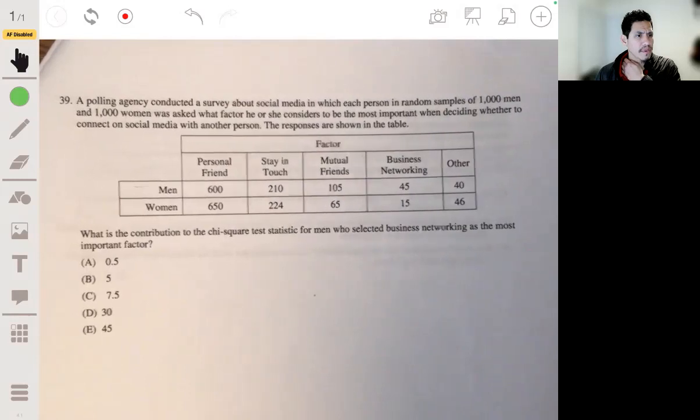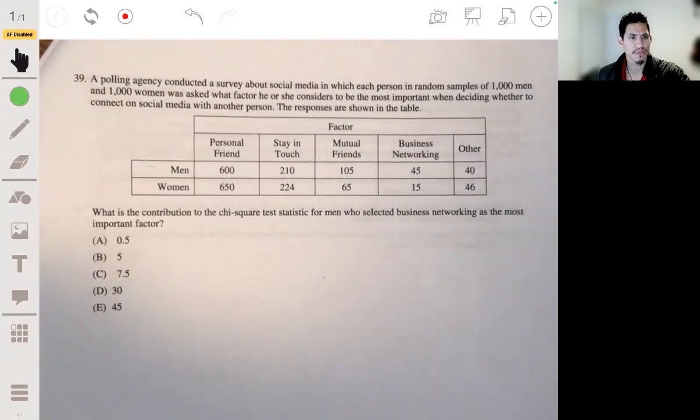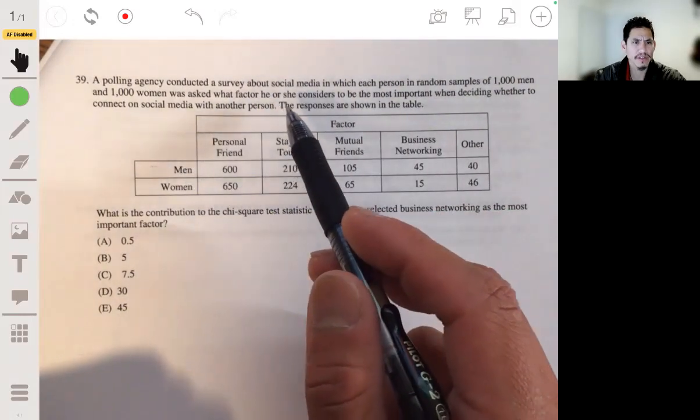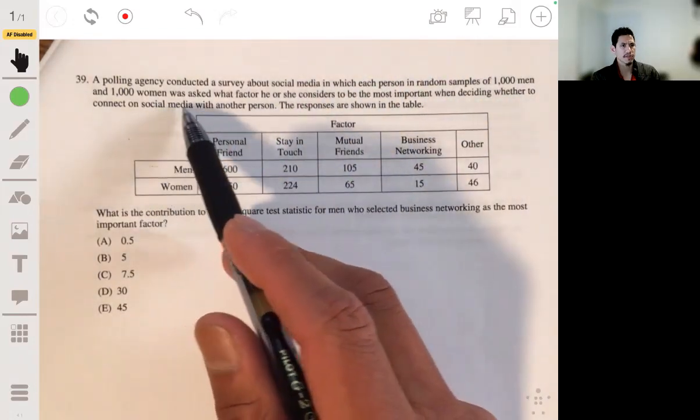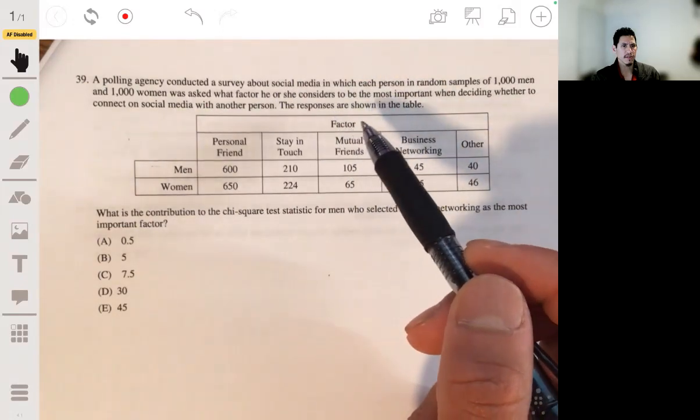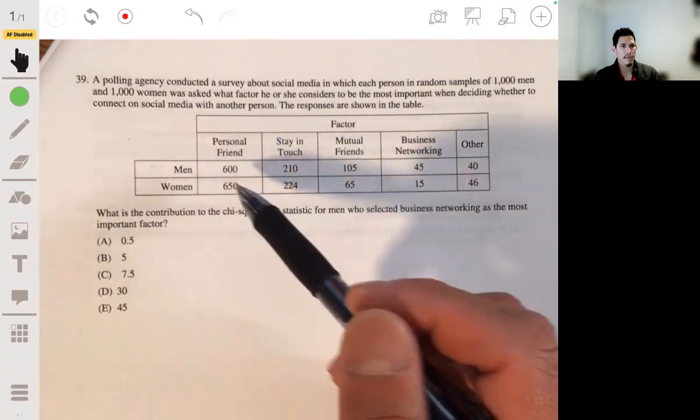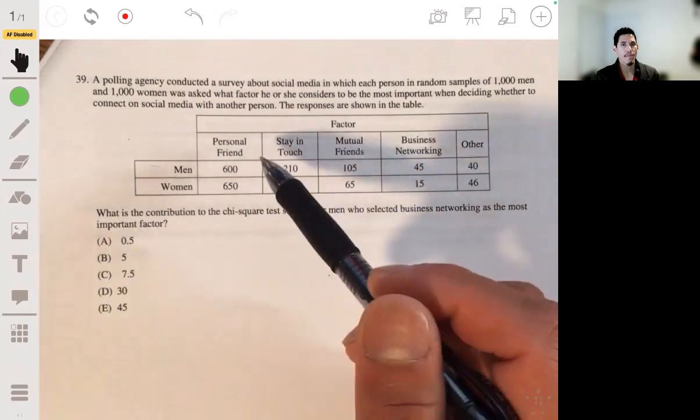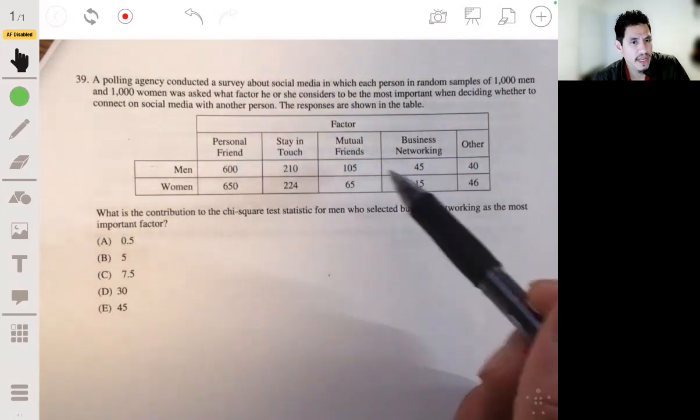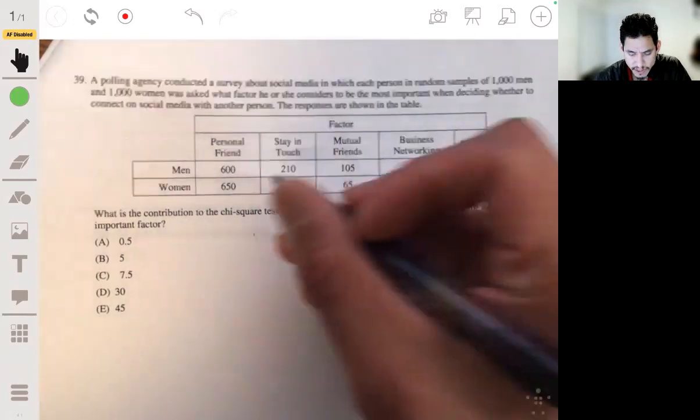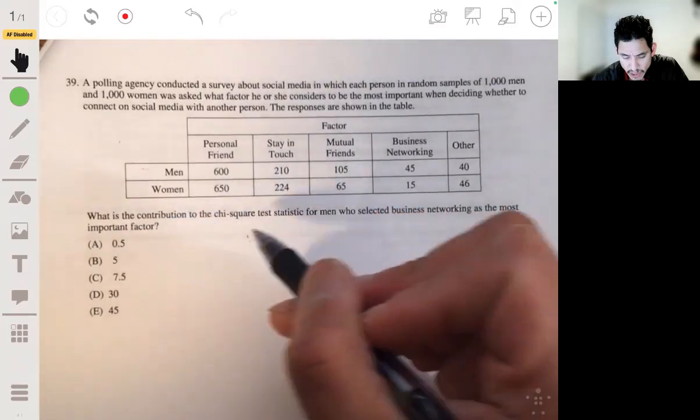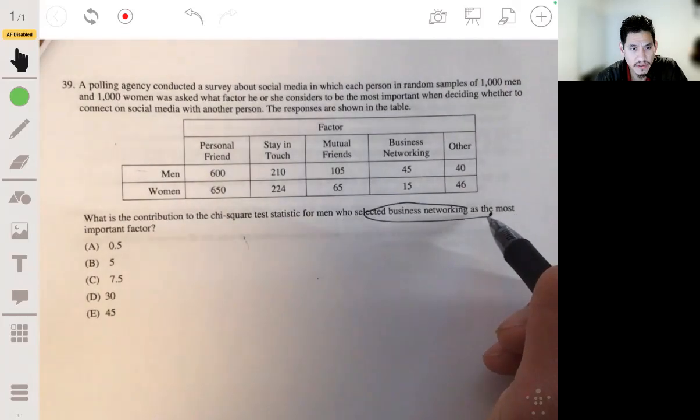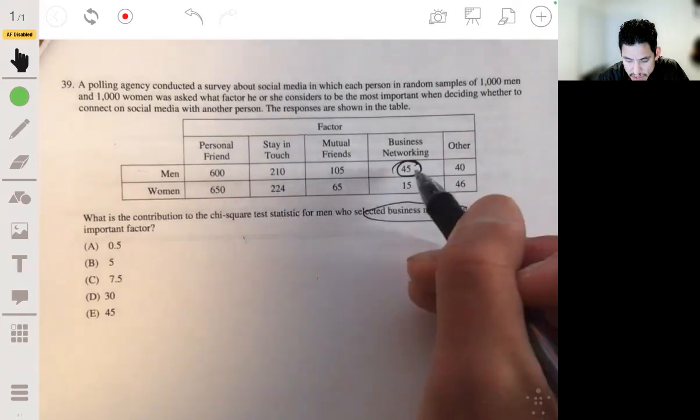A polling agency conducted a survey about social media in which each person in random samples of 1,000 men and 1,000 women was asked what factor he or she considers to be the most important in deciding whether to connect on social media with another person. Responses are shown with you. These are all of our observed counts because we're talking about chi-square statistics. And we want to look, what is going to be contributions to the chi-square statistic for men who selected business networking as the most important factor?